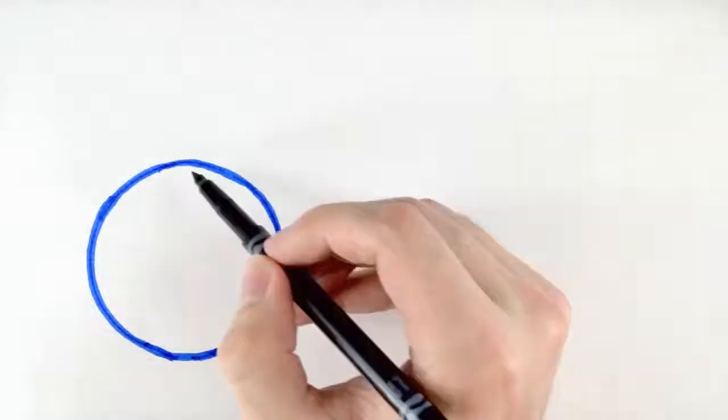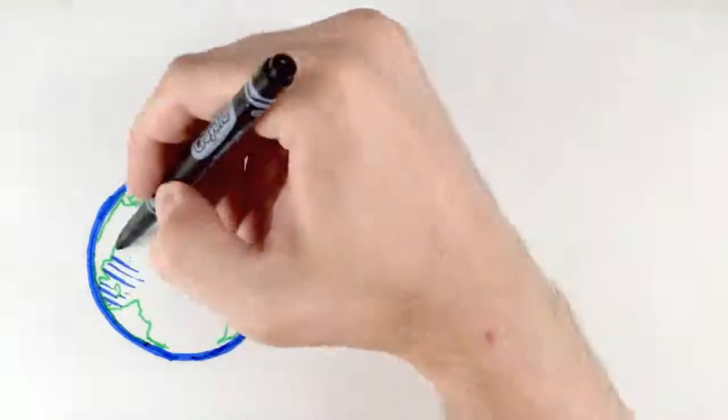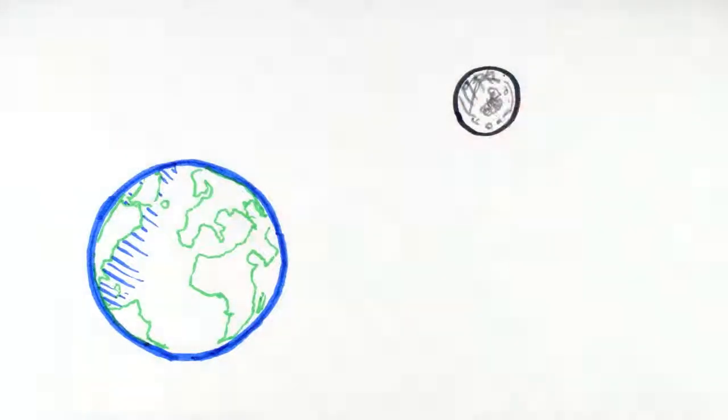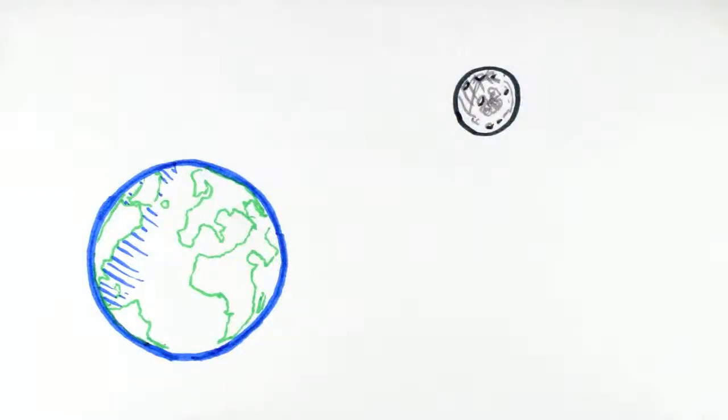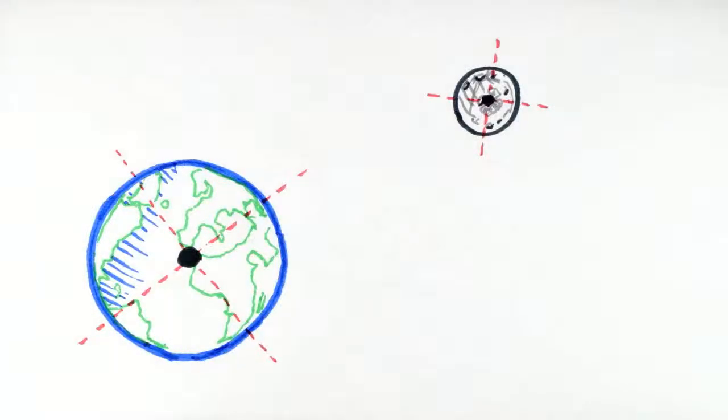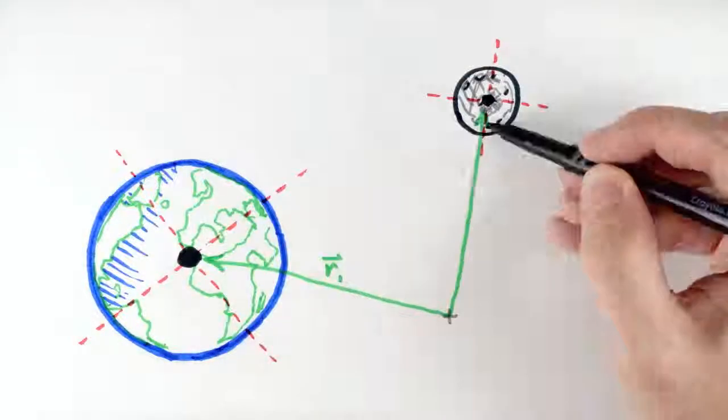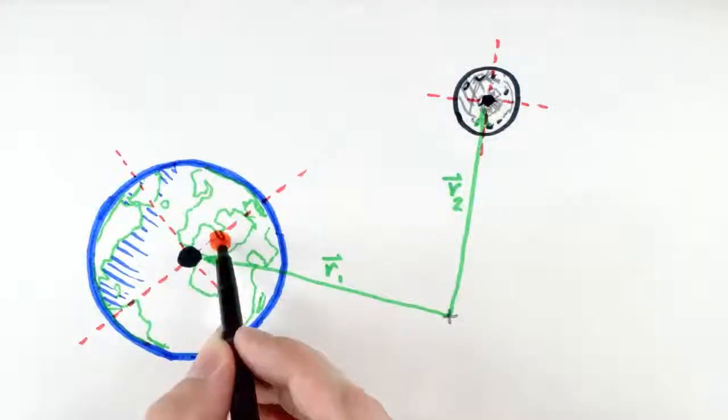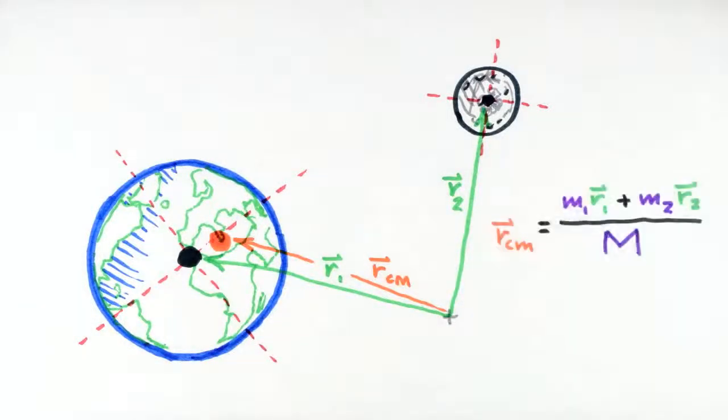This approach to computing the center of mass will work even if the pieces of mass in our system are large. As long as we are able by some means, say by using symmetry, to find the center of mass for each piece, then we can use the same averaging procedure to find the center of mass of a collection of large objects.